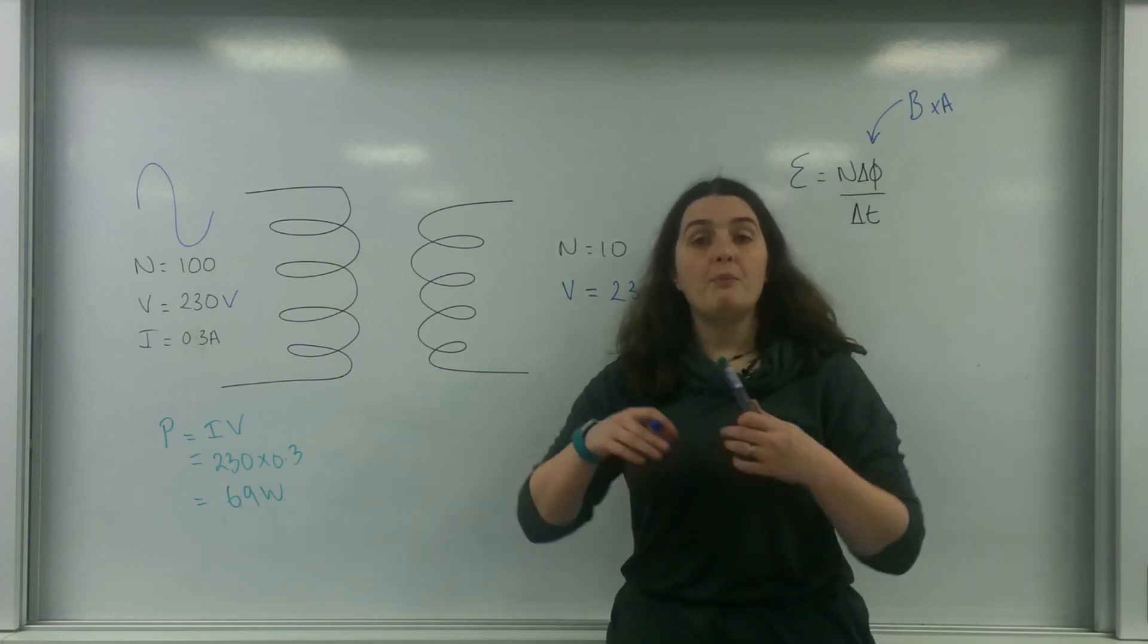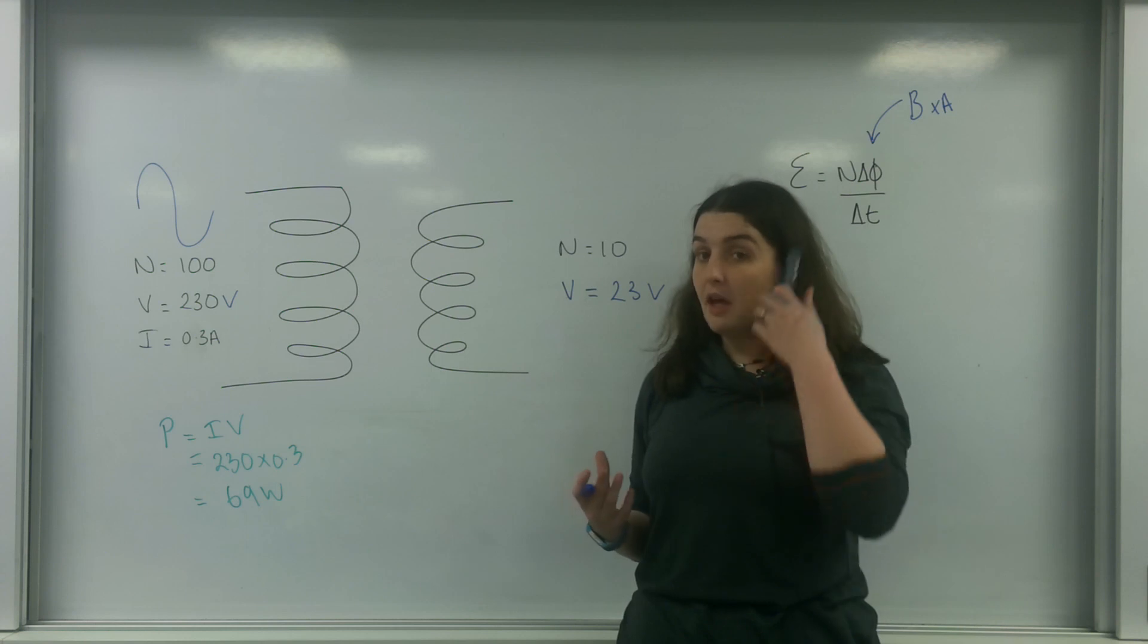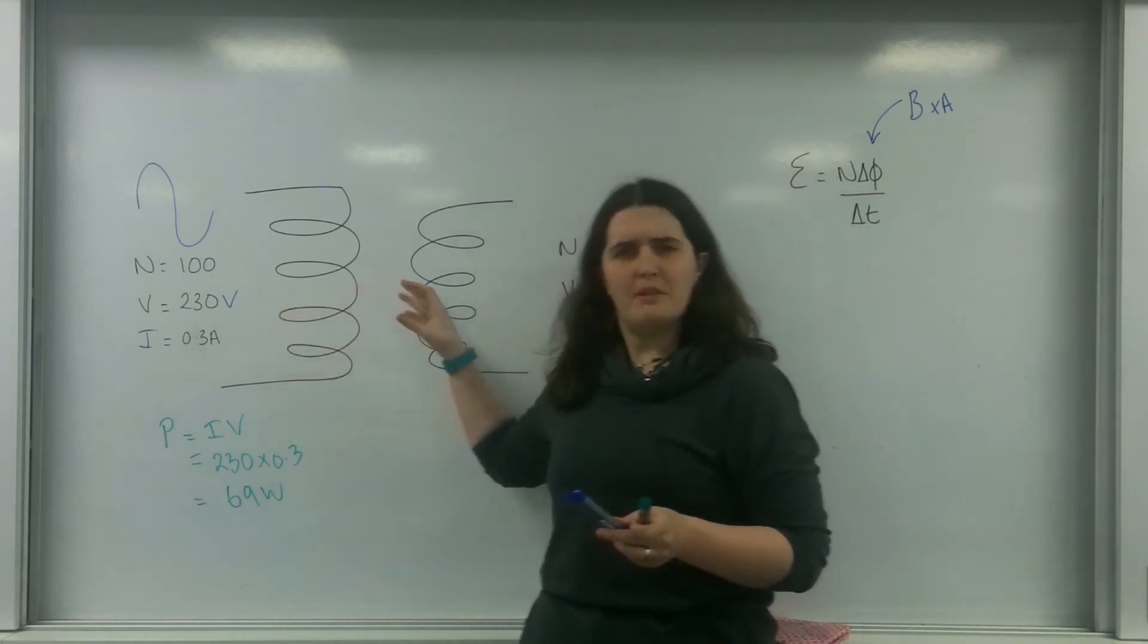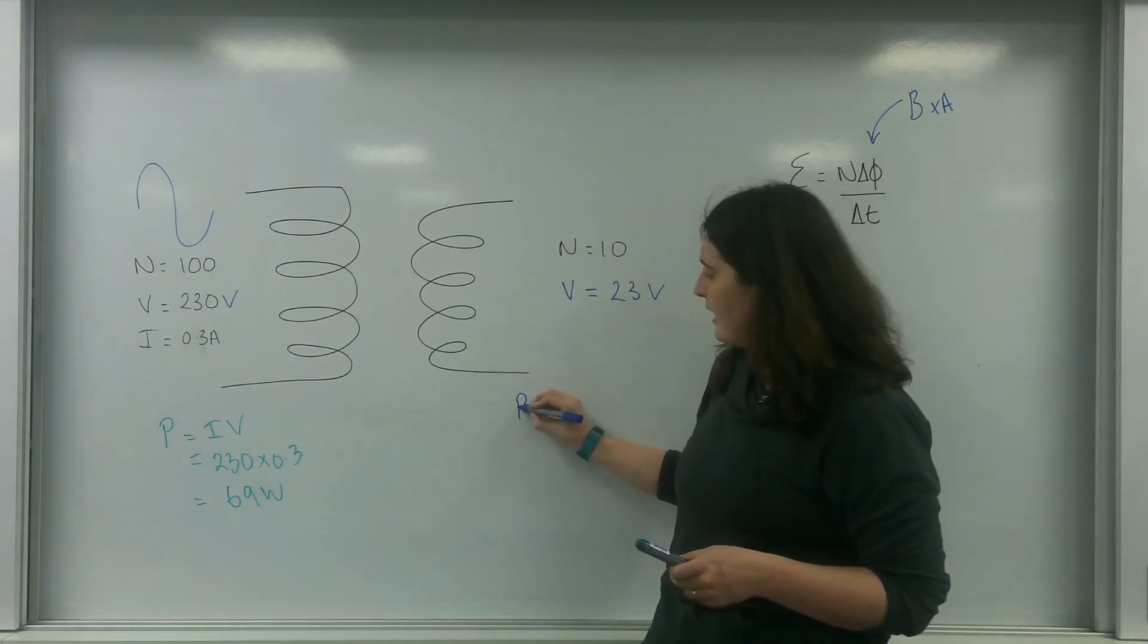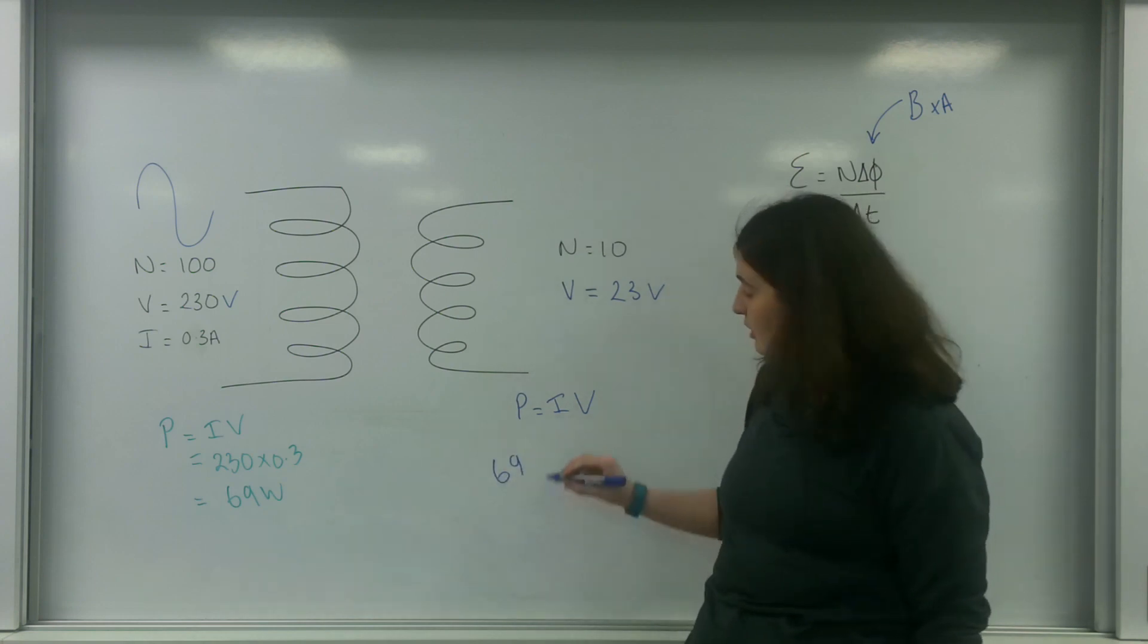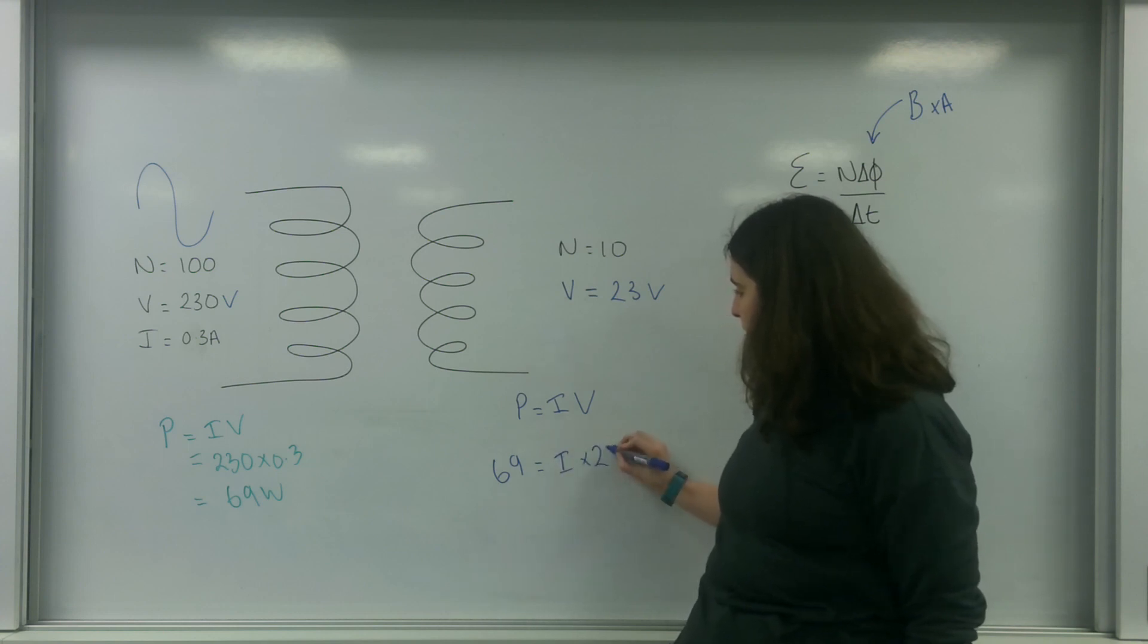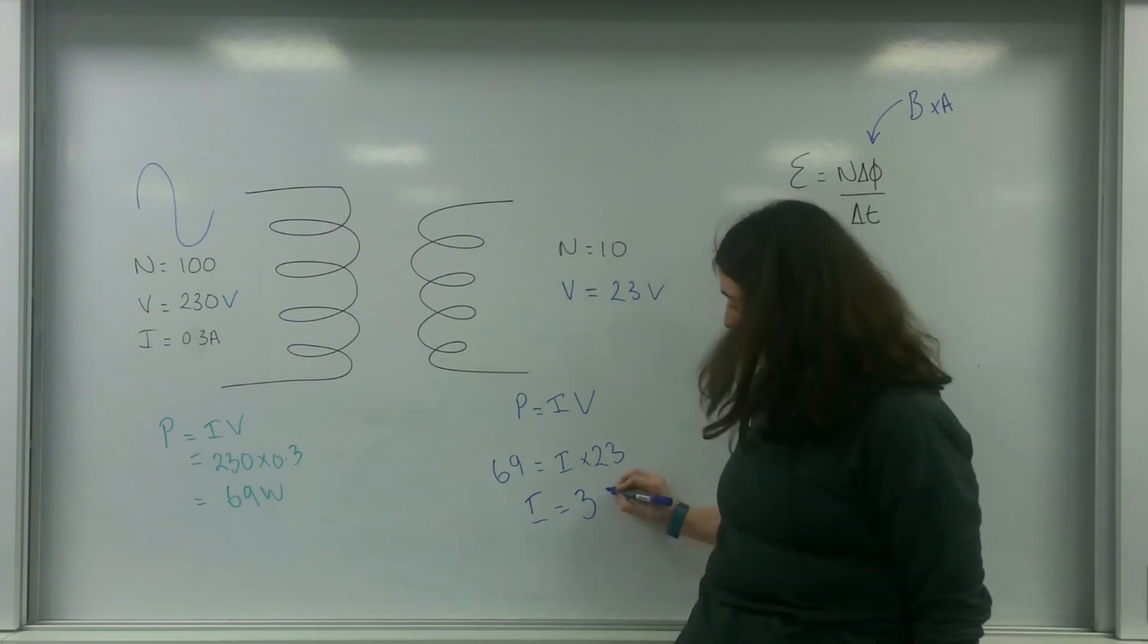However, one of the basic principles of the universe is that energy is conserved. So the energy that this one has must be the energy that this side has too. So if I use P equals IV, I know I must have 69 watts. So I times 23 means I is going to be three amps.